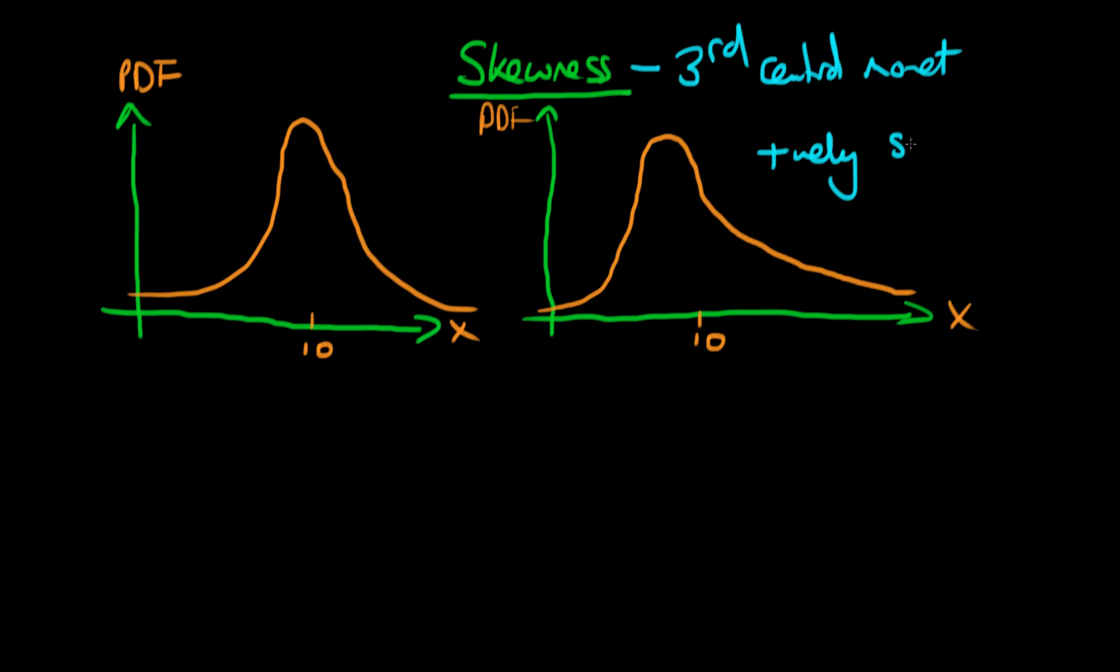It's positively skewed because I've skewed my variable out towards the positive x direction. I've got a long positive tail of probability distribution, and that's why we call it positively skewed.